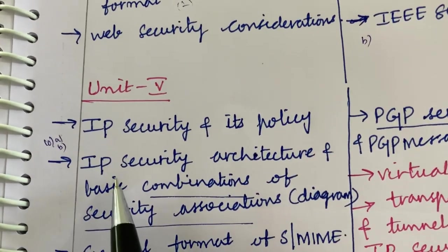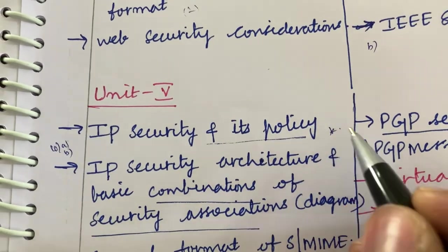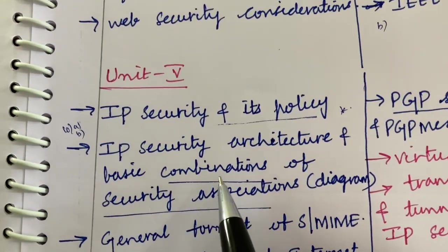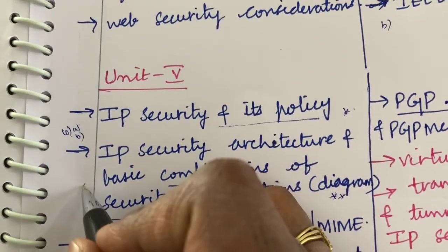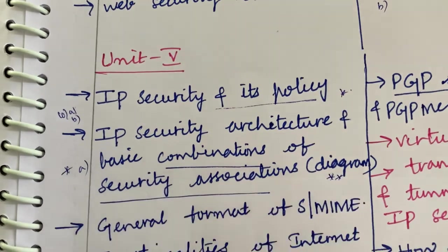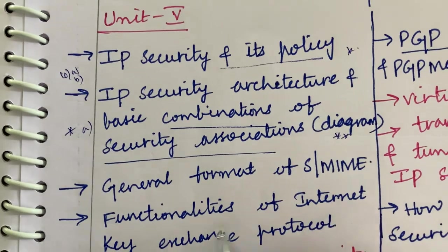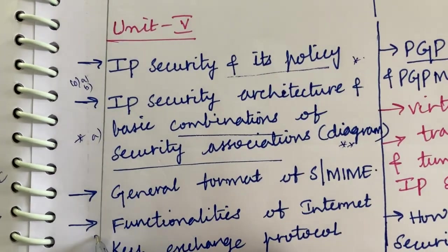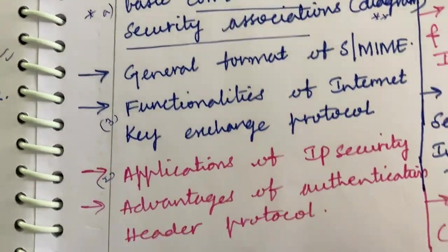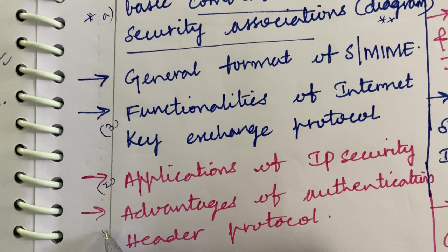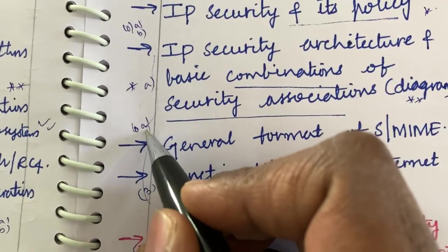Unit 5 covers 10A/10B and 11A/11B. IP security and its policies explained in detail is very important. IP security architecture and basic combinations of security associations along with a diagram may be a 10A question. The general format of S/MIME and functionalities of the Internet Key Exchange protocol may be a 3-mark question. Applications of IP security is a 2-mark question, and the advantages of the Authentication Header protocol may be a short question from this part.